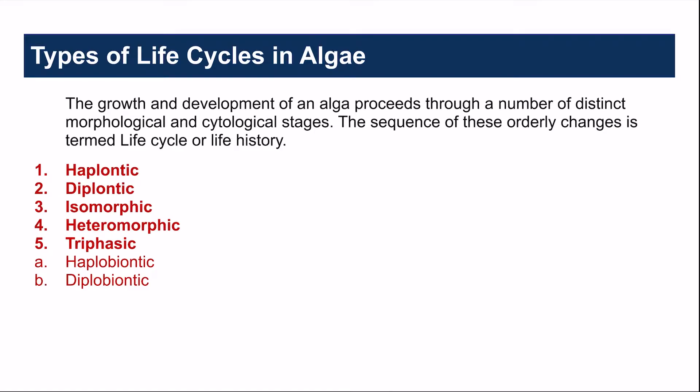Whereas in angiosperms, all the plants are diploid and the haploid stage is restricted only to the gametes. In algae, the main types of life cycles found are haplontic, diplontic, isomorphic, heteromorphic, and triphasic. Triphasic life cycle is of two types: haplobiontic and diplobiontic. In algae, growth and development passes through different and distinct morphological and cytological stages, and the sequence of these changes is termed as life cycle or life history.